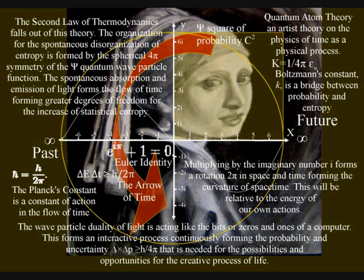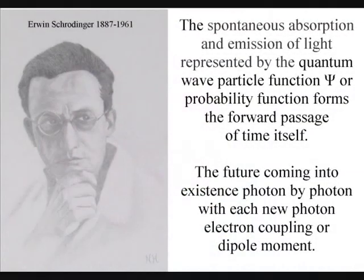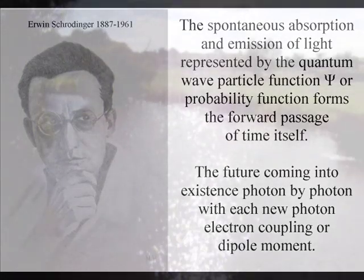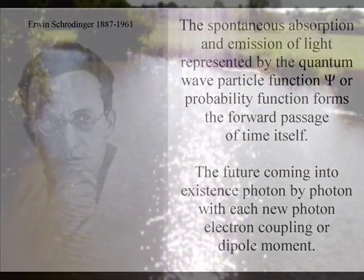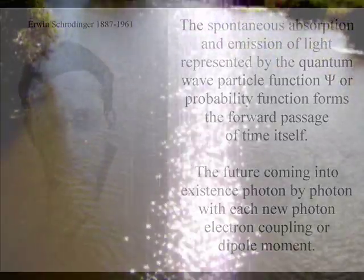This theory is based on just two simple postulates. The first postulate is that the spontaneous absorption and emission of light, represented by the quantum wave particle function or probability function of quantum mechanics, forms the forward passage of time itself, with the future coming into existence photon by photon with each new photon-electron coupling or dipole moment.